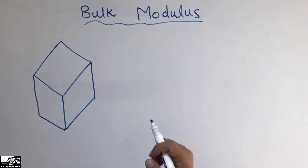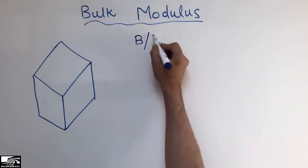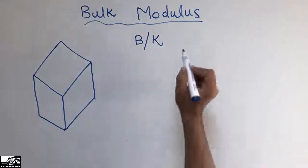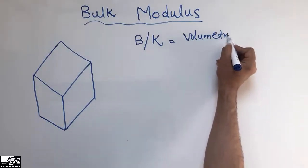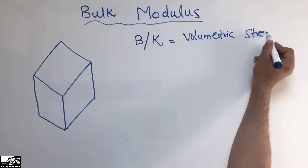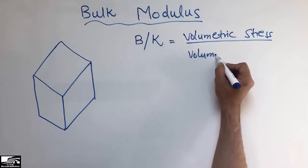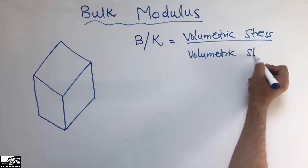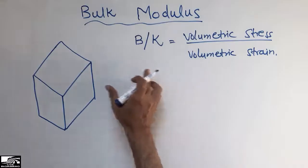Bulk modulus is generally presented by the capital B or the capital K, and it is the ratio of the volumetric stress to the volumetric strain. I can explain this by considering a cube.